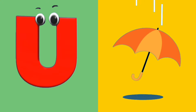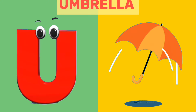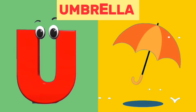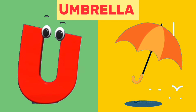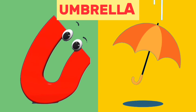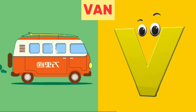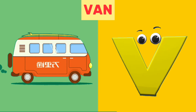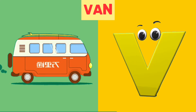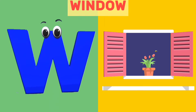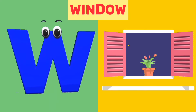U is for umbrella. V is for van. W is for window.